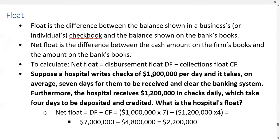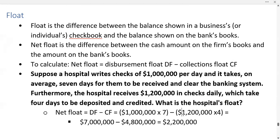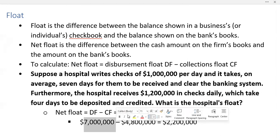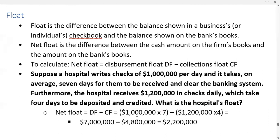Using the formula, you can calculate your disbursement float, which is one million dollars for seven days, for a total of seven million dollars. Minus your collections float: 1.2 million dollars for four days equals 4.8 million dollars. Subtracting the difference between your disbursement float and your collections float, you get the answer of 2.2 million dollars as your net float.